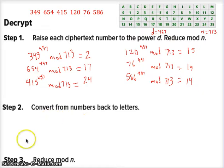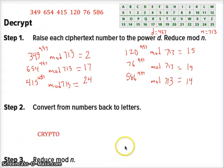It says convert from numbers back to letters. And of course, we get the message we started with. A couple of weird things here. First of all, in the book, in the worksheet, it says reduce mod n. That doesn't make any sense. We reduce mod n up here.